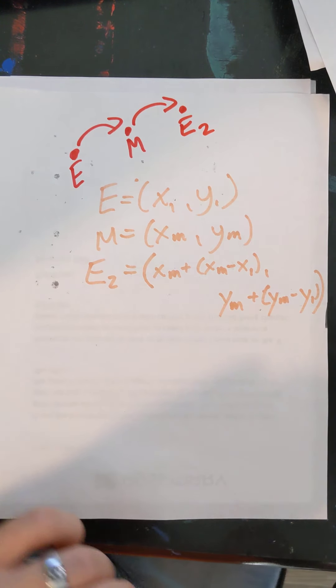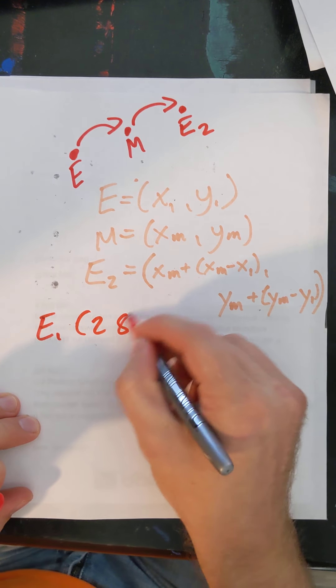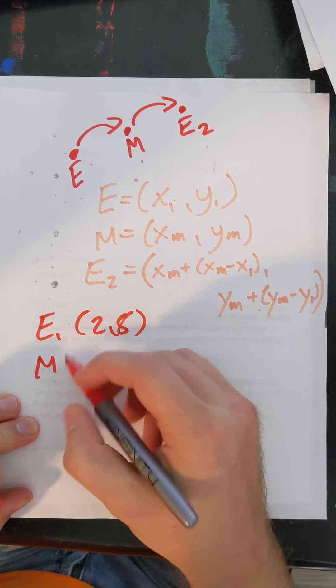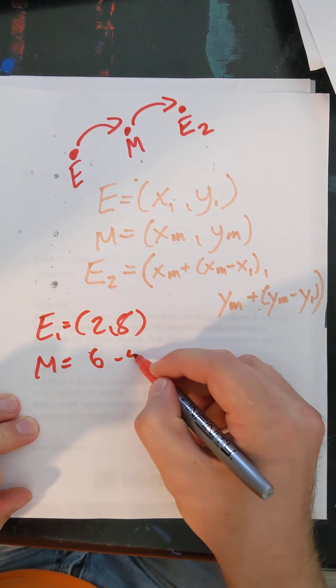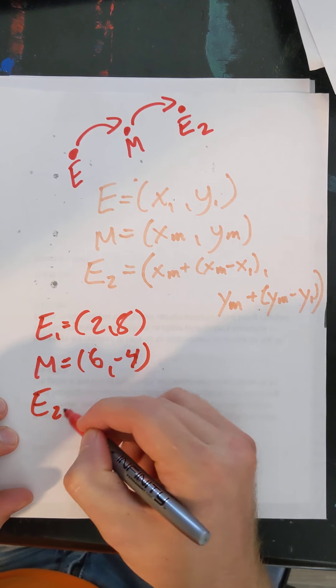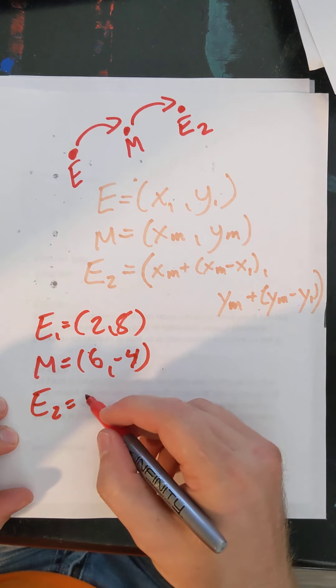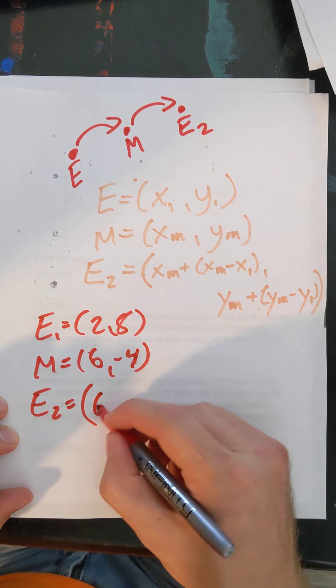So let's say I give you an endpoint, 2, 8, and I give you a midpoint at 6, negative 4. And I want you to find the other endpoint. Well, all I'm going to do is just plug stuff into the formula. We're just plugging in. It's okie dokie. All right.